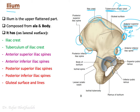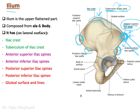The anterior superior iliac spine is an important landmark where the inguinal ligament attaches laterally, as we mentioned when discussing the GI system. You can feel it by placing your hand on the iliac crest and moving slightly anteriorly until you feel a sharp edge — that sharp protruded point is the anterior superior iliac spine. Posteriorly you have the posterior superior iliac spine and the posterior inferior iliac spine.